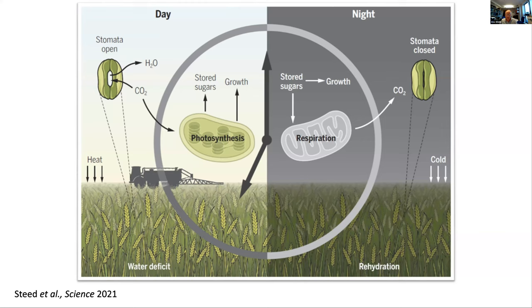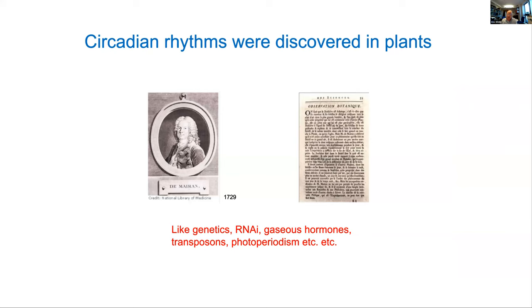We have a very rhythmic external environment and internal metabolism in the plant. Circadian rhythms were famously first discovered in plants — just like genetics, RNA interference, gaseous hormones, transposons, and photoperiodism. They were discovered by a French researcher called de Mairan, who found it so uninteresting he never published his results. They were actually written up by a friend of his as a sort of passing conversation.